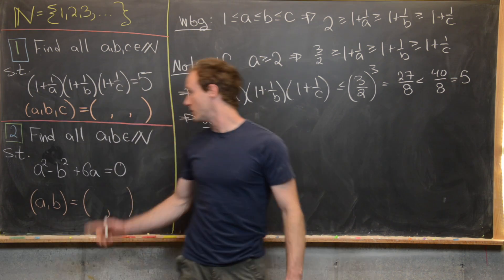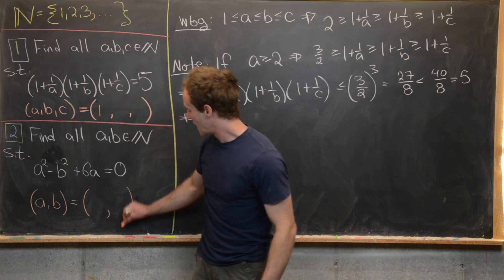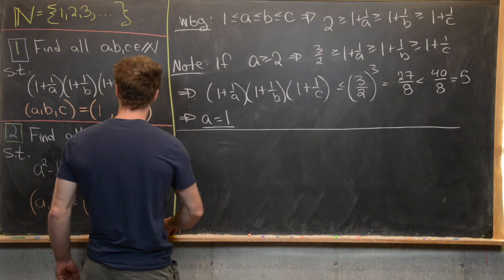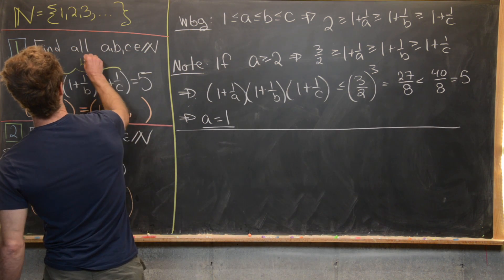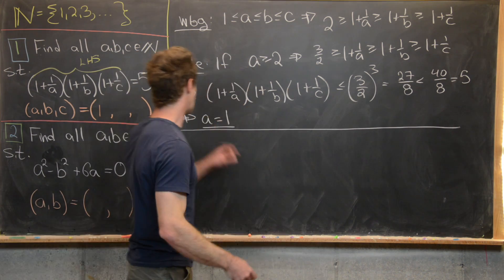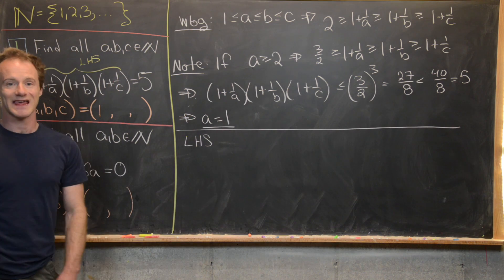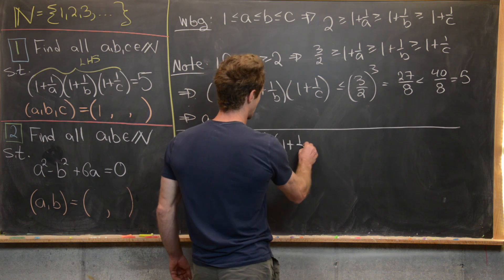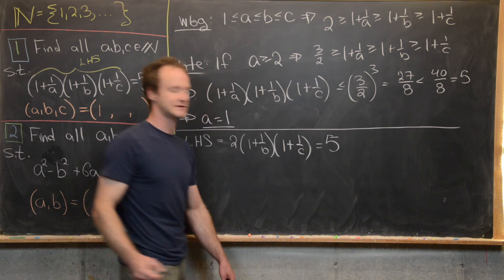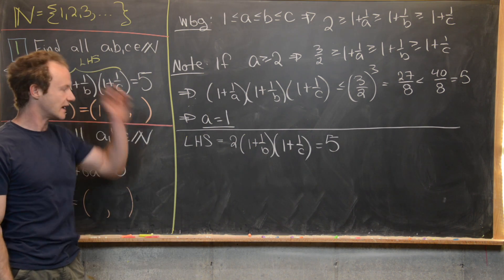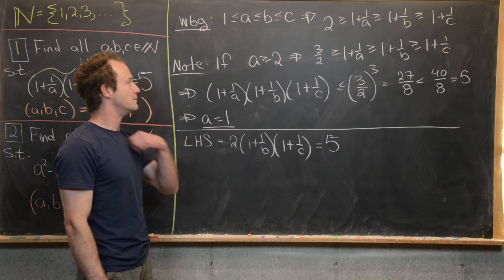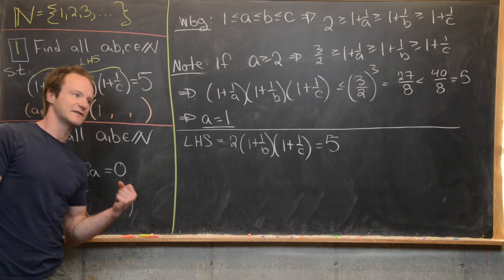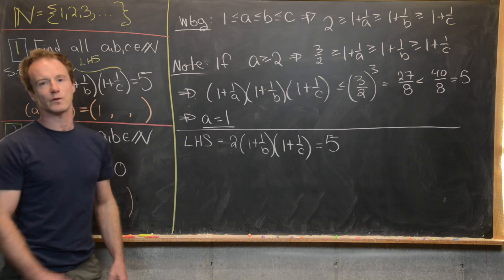We know one part of this triple already: a must equal one. Now we need to play the same game on b and c. Under the construction so far, with a = 1, the left-hand side becomes 2·(1 + 1/b)·(1 + 1/c) = 5. Now we're going to bound b. You might play with it — maybe b cannot be bigger than or equal to five, four, three — but it turns out we can use the same argument.